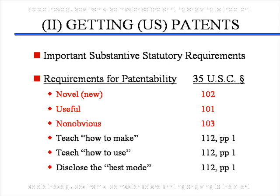In addition, we will also look at the requirement that you teach one skilled in the art how to make and how to use the invention, as well as disclosing the best mode. Those three requirements are set forth in 35 U.S. Code, Section 112, Paragraph 1.